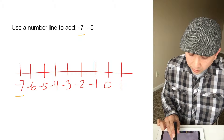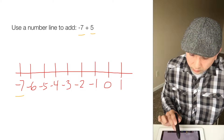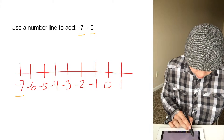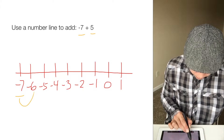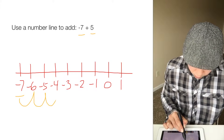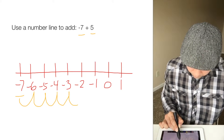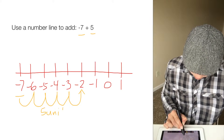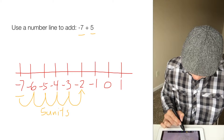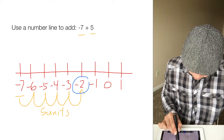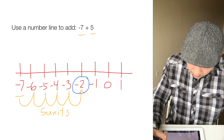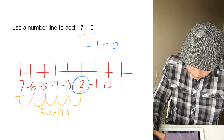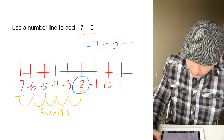Because b, which is 5, is positive, we're going to move 5 units to the right. So we go 1, 2, 3, 4, 5 — five units. The number where we end up is negative 2. So that means negative 7 plus 5 equals negative 2.